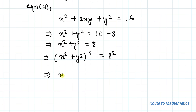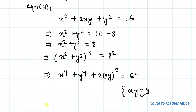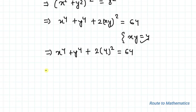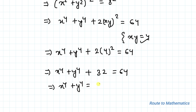Now squaring both sides of x squared plus y squared equals 8, we get x squared plus y squared whole squared equals 8 squared. This gives x to the power 4 plus y to the power 4 plus 2xy squared equals 64. From equation 5, xy equals 4, so 2 times 4 squared equals 32. Therefore x to the power 4 plus y to the power 4 plus 32 equals 64, giving us x to the power 4 plus y to the power 4 equals 32. That is our answer.